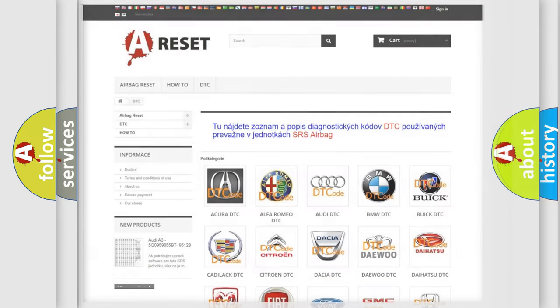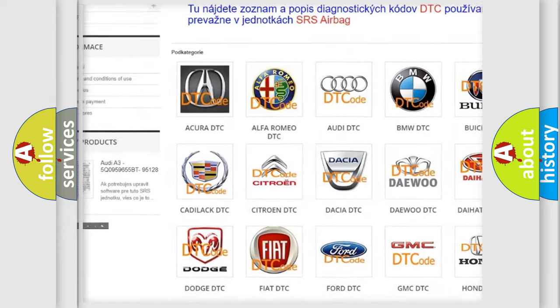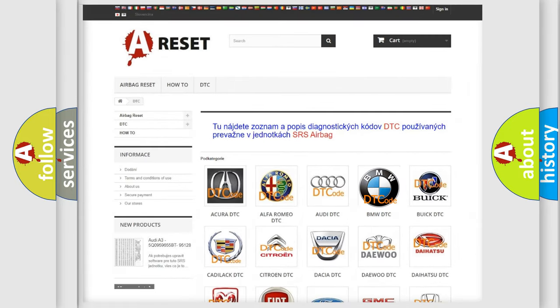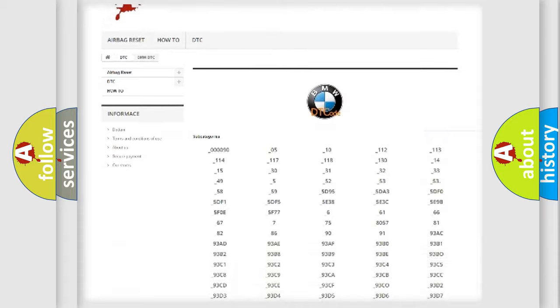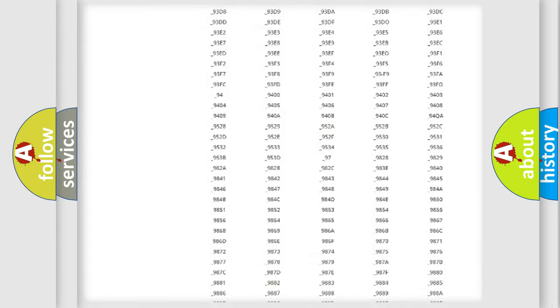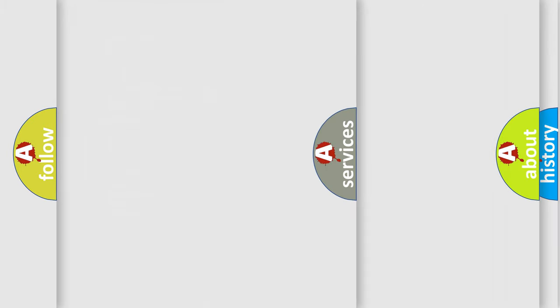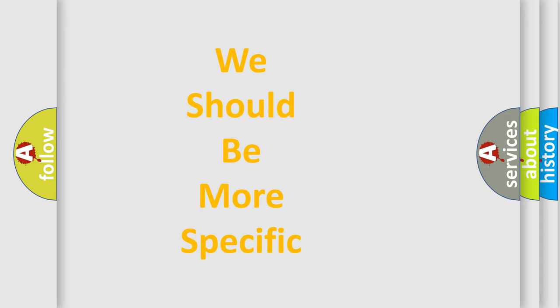Our website airbagreset.sk produces useful videos for you. You do not have to go through the OBD2 protocol anymore to know how to troubleshoot any car breakdown. You will find all the diagnostic codes that can be diagnosed in BMW vehicles and many other useful things.